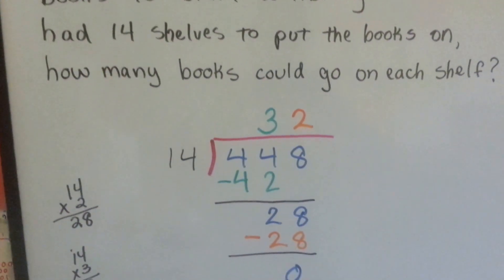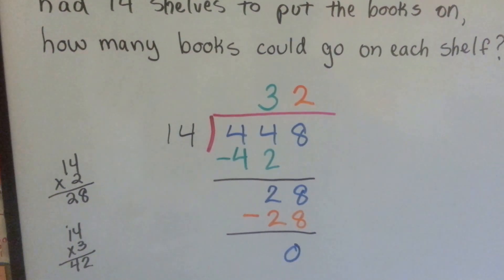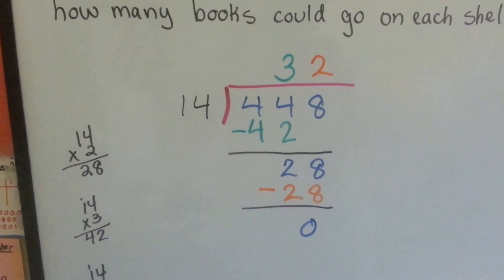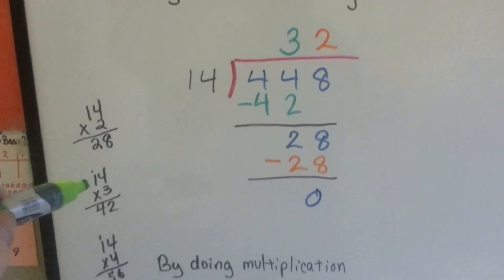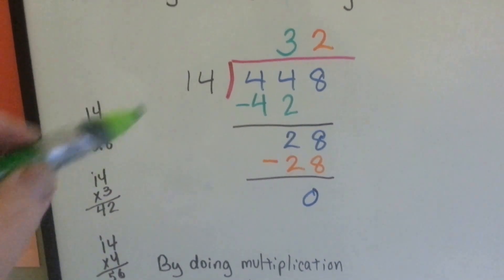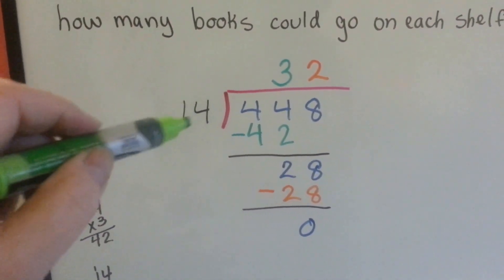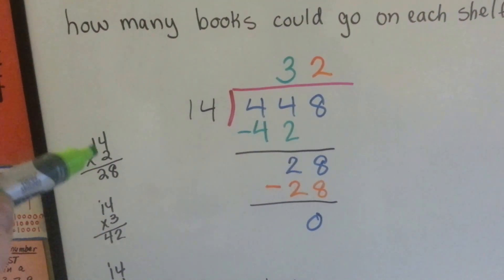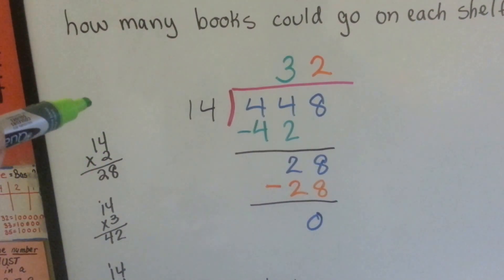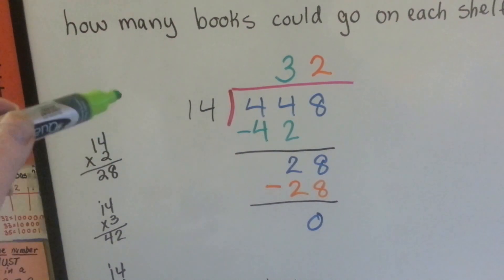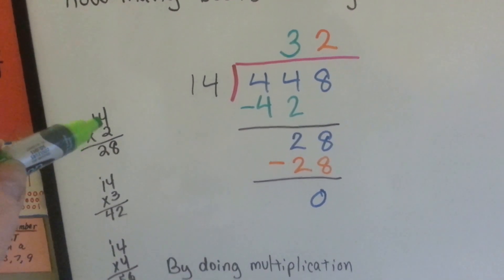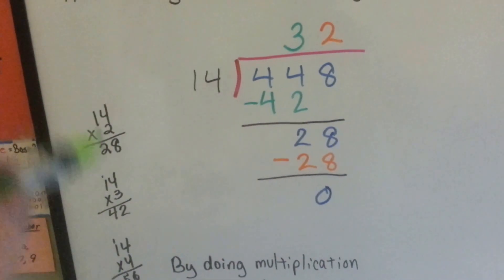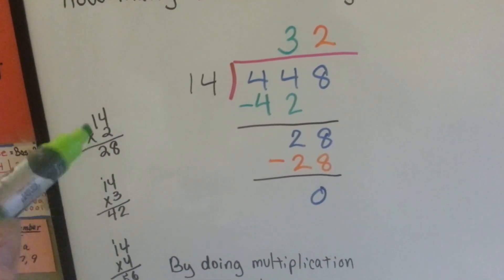What I do — and you can do this if you want — I do multiplication on the side. If I'm going to deal with 14 as a divisor, I immediately do 14 times 2. I already know 14 times 1, so I don't need that one. But I do 14 times 2, 14 times 3, 14 times 4, and I do them on the side just in case.